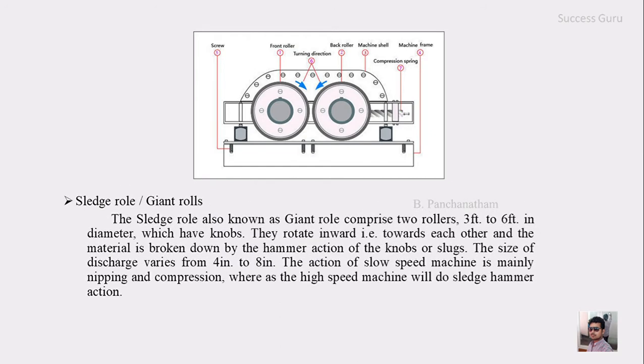The second thing is the sledge roll, also called the giant roll, which comprises two rollers with size of 3 to 6 feet in diameter which have knobs. These rollers rotate towards each other and the material you put here will break down by the hammer action of the knobs on the slugs. The size of the discharge ranges from 4 inch to 8 inch so you can fix according to your requirements.